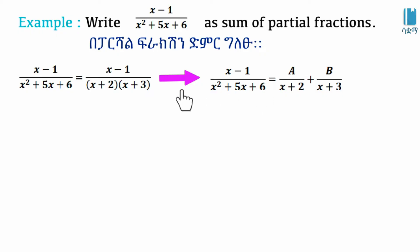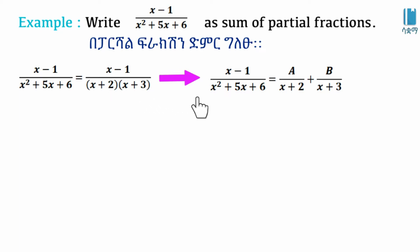Here, (x + 2) is a linear factor and (x + 3) is a linear factor. So we write the partial fraction decomposition as A over (x + 2) plus B over (x + 3), because (x - 1) over (x² + 5x + 6) equals this partial fraction form.